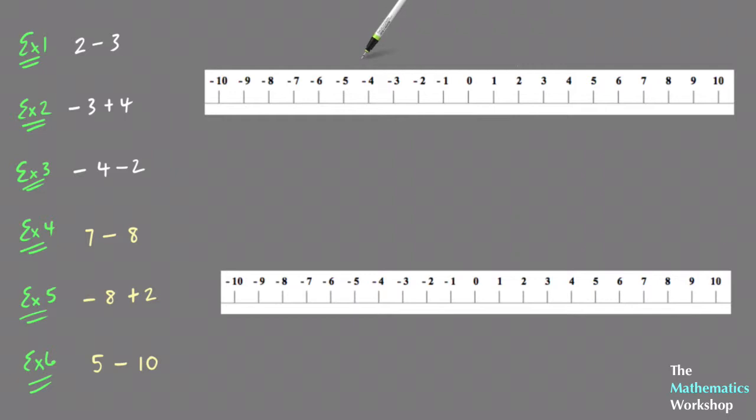The first example here, 2 minus 3. The way you use the number line to add and subtract numbers is to start on the first number and move this many in that direction. So you're going to start on the number 2 and move 3 in the negative direction, which is always to the left.